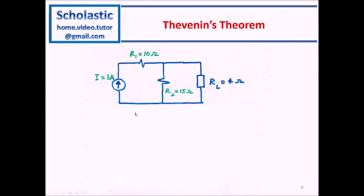This is the circuit given, which has a current source indicated by an arrow here, I equal to 3 ampere current source, and two resistors, 10 ohms and 15 ohms, and a load resistor, 4 ohms. Find the Thevenin's equivalent circuit of the above.